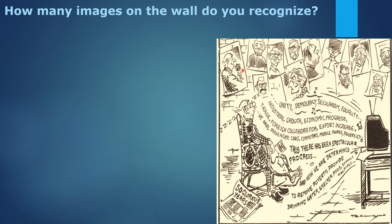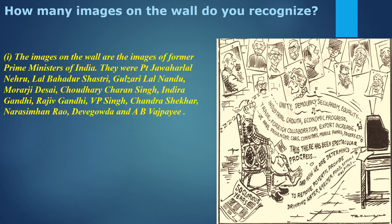You can see starting from the first Prime Minister of independent India: Jawaharlal Nehru, Lal Bahadur Shastri, Gulzarilal Nanda, Morarji Desai, Chaudhary Charan Singh, Indira Gandhi, Rajiv Gandhi, V.P. Singh, Chandrasekhar, Narasimha Rao, Deve Gowda, and Atal Bihari Vajpayee. These are the images of 12 Prime Ministers of India.